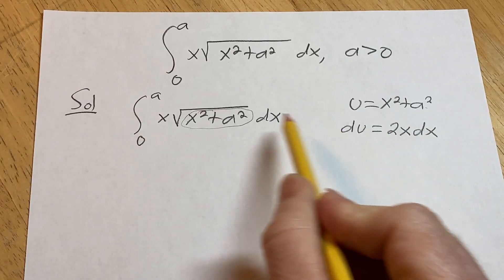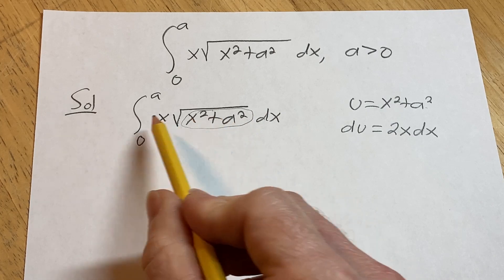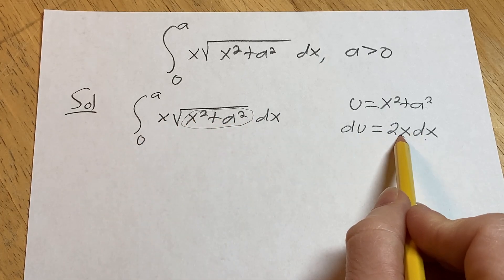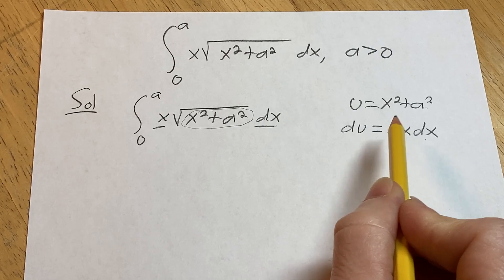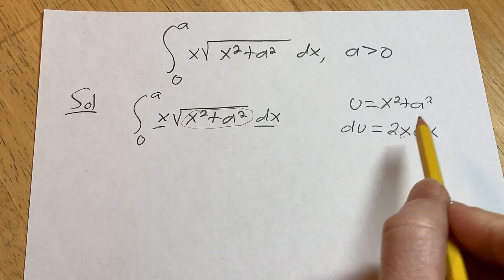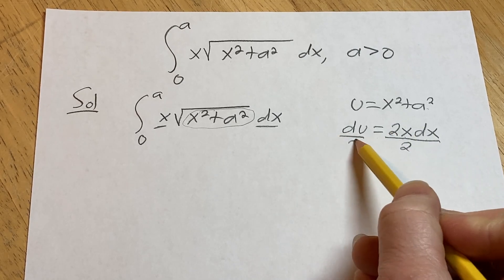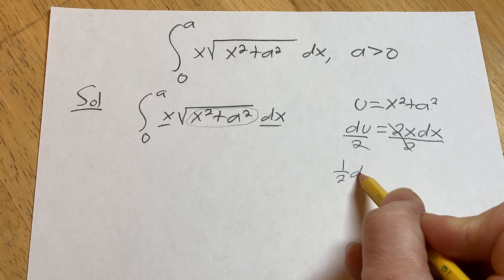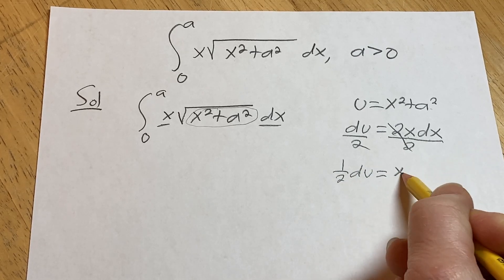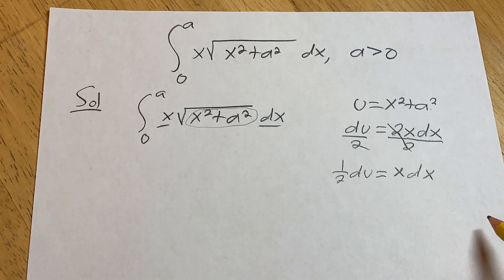Now what you want to do is look here. There's no 2 here. Here I have x dx, but here I have a 2. So you have to make this look like this. You have to get rid of the 2, so you can divide both sides by 2. So du over 2 becomes 1 half du, and that's equal to x dx.